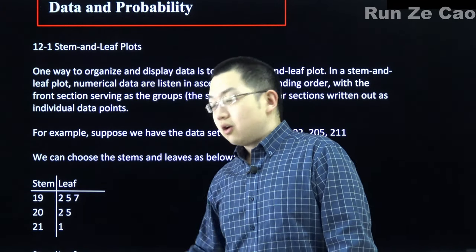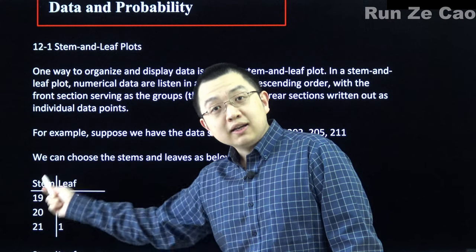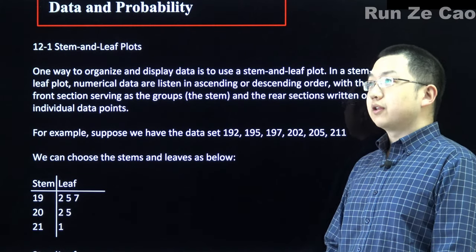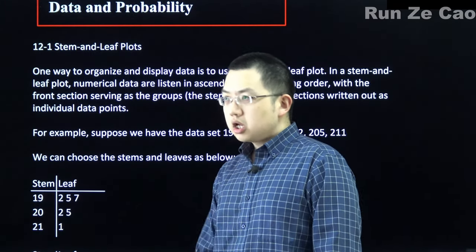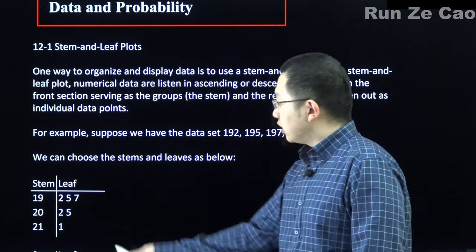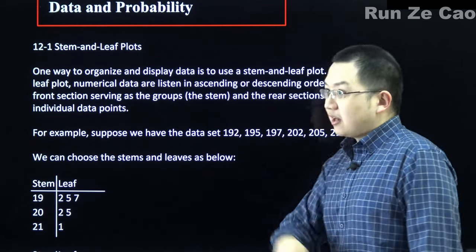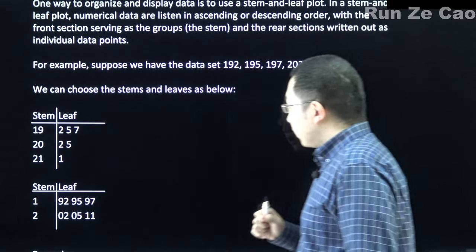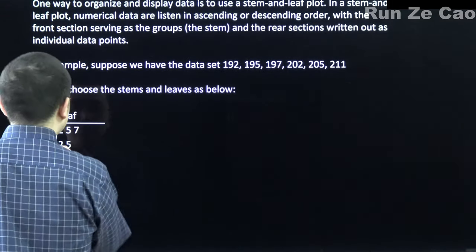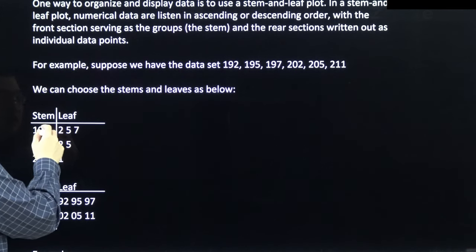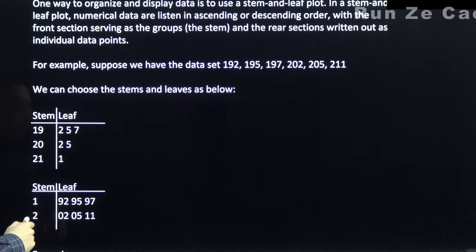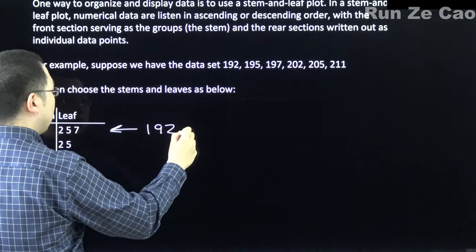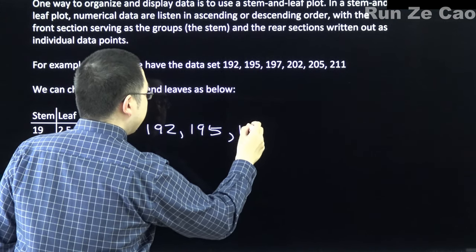For example, if a bin covers 190 to 199 and there were three numbers in that range, a regular histogram bar would just tell you that — you wouldn't know exactly what those numbers were. But with a stem and leaf plot, you do know. So for values 192, 195, and 197, you can see the actual data points.